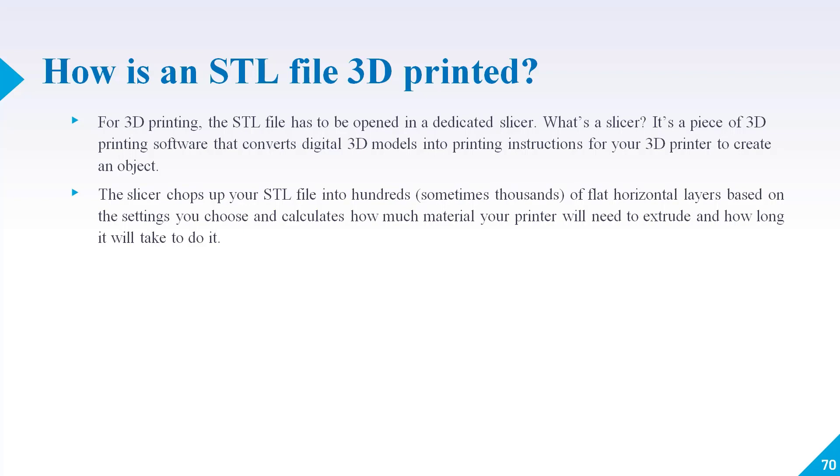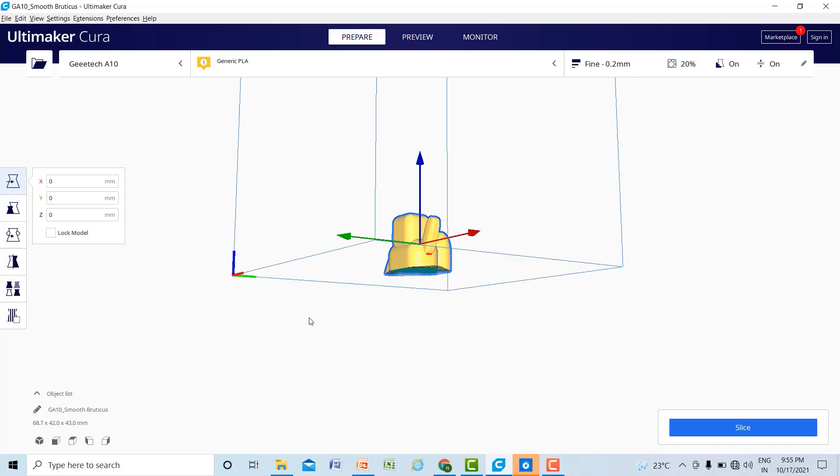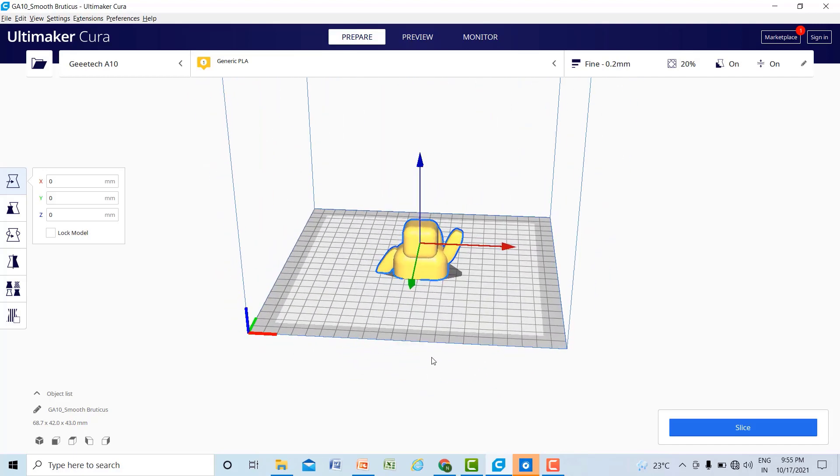Let me show you how you can convert your STL file into G-code. For that you will use slicing software. Here I am using Cura software for slicing our STL file. This is an STL file I have imported in this Cura software, and I want to convert this STL file into G-code so I can print this in a 3D printer, because 3D printer will accept G-code. Here is the option of slice.